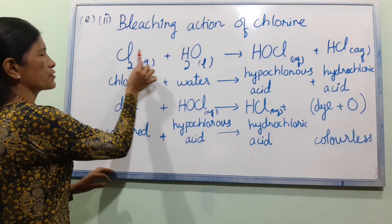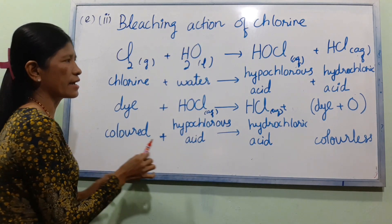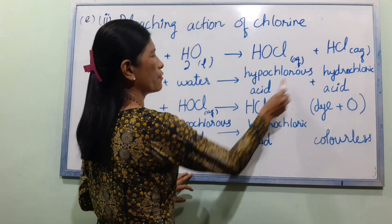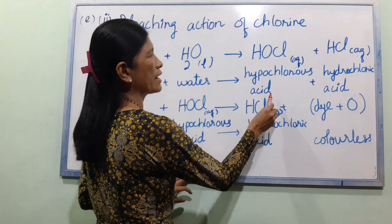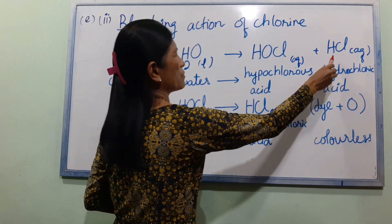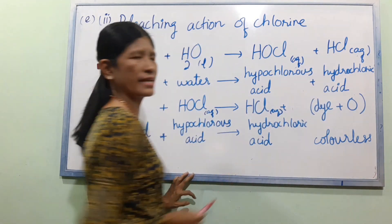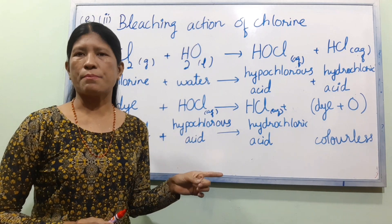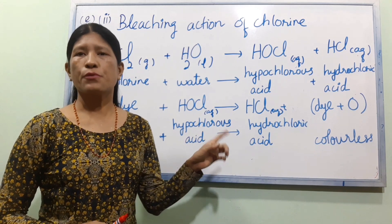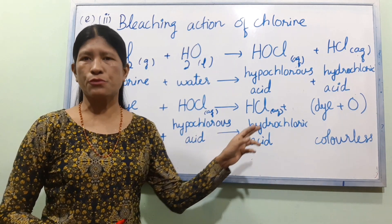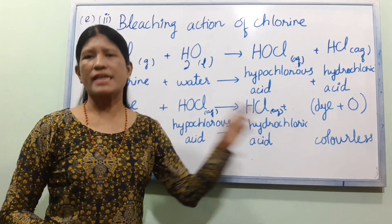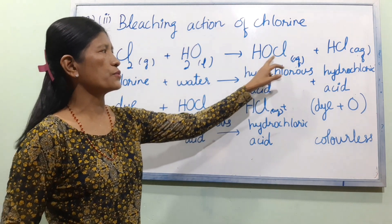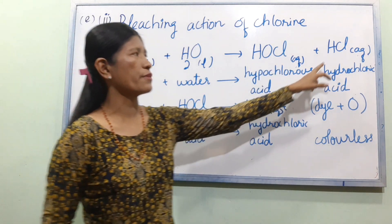Chlorine gas reacts with H2O liquid to form HOCl — hypochlorous acid — and HCl, hydrochloric acid. Chlorine gas plus H2O gives HOCl and hydrochloric acid.